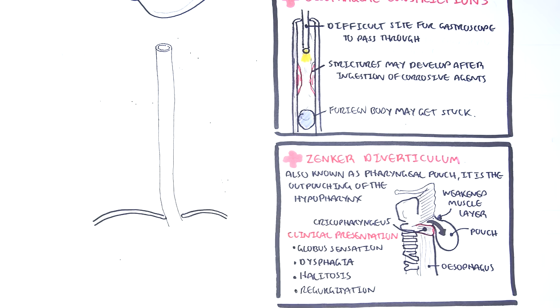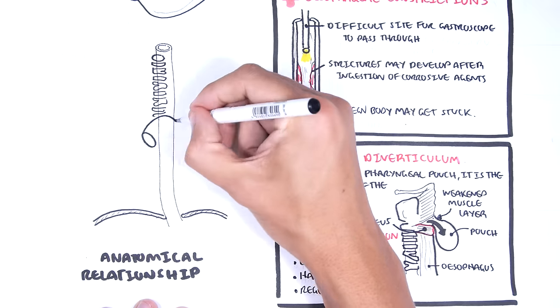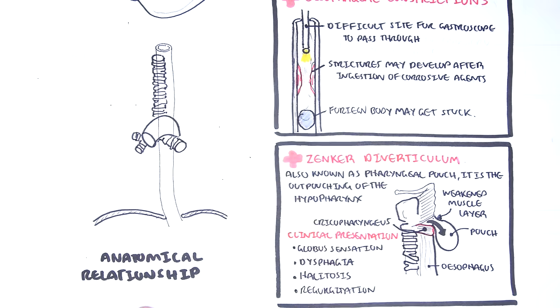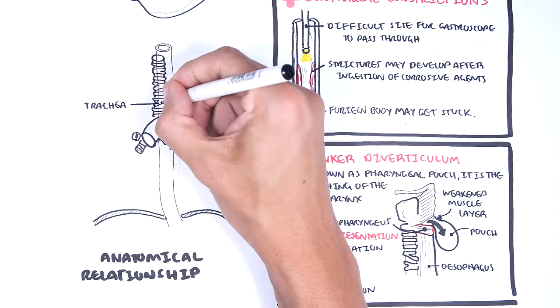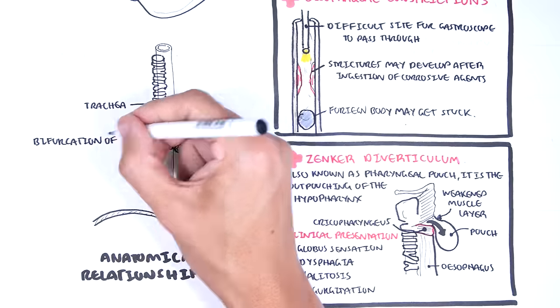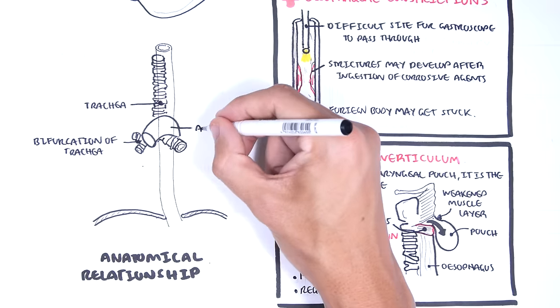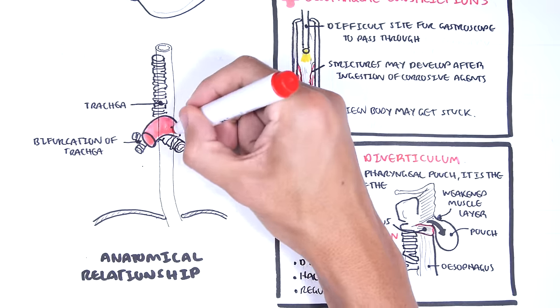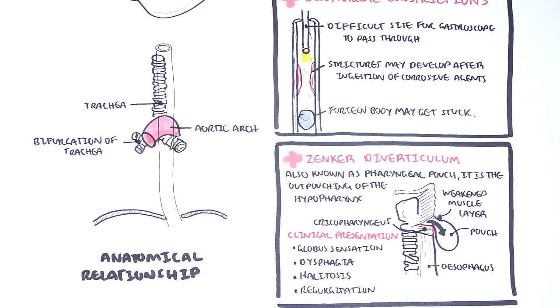The anatomical relationship of the esophagus: the trachea is anterior to the esophagus, bifurcation of the trachea, aortic arch anterior to the trachea at the sternal angle, T4 and T5 vertebral level.